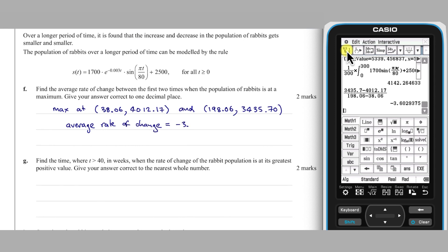This result is equal to minus 3.6 rabbits per week to one decimal place.